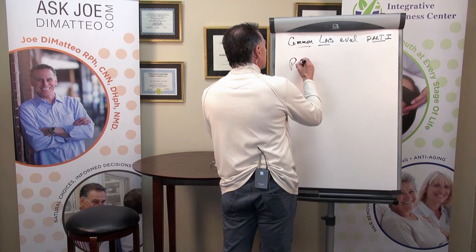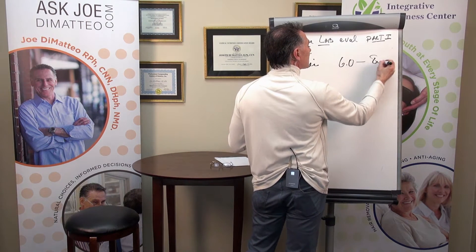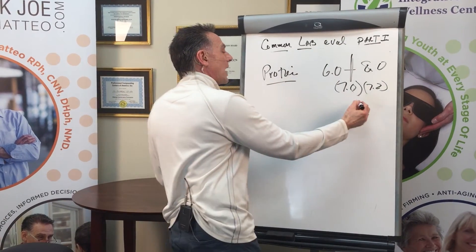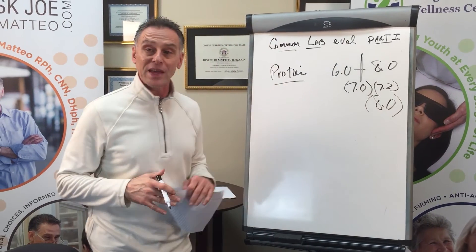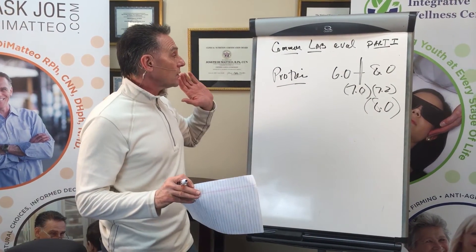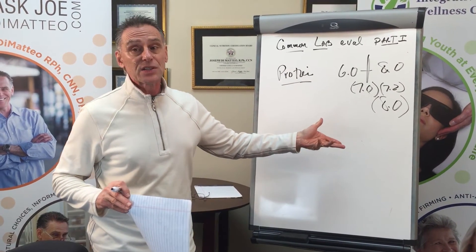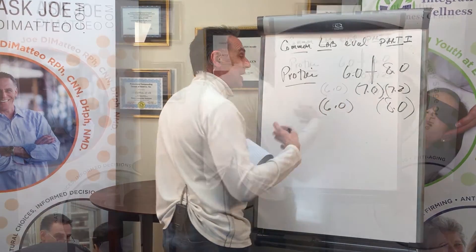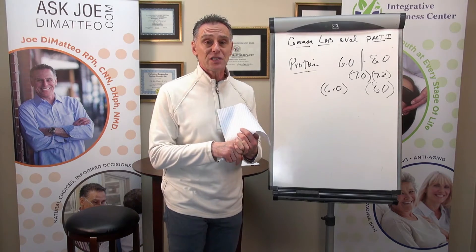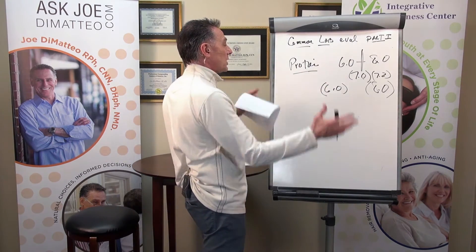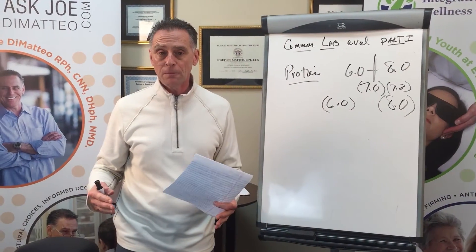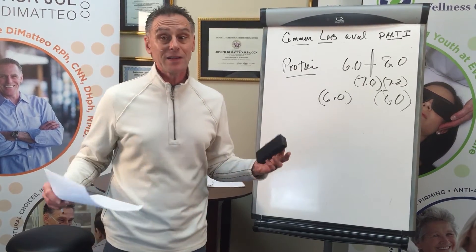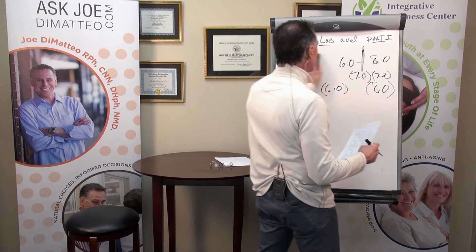Let's talk about albumin level and serum protein first. Typically, the laboratory value is six to eight. We want you somewhere around seven, maybe 7.2 — more midpoint. If my serum proteins are way high — at eight — there's something wrong. You're either catabolic, possibly dealing with anorexia, or consuming a ton of protein. If their numbers are very low, down around 6.0, they possibly do not consume enough protein or are not digesting it well. So serum protein is critical — we want you midpoint.